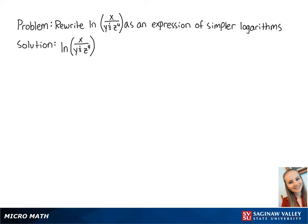Since there is division within the logarithm, we're first going to use the quotient property to rewrite this as the ln of x minus the ln of y to the 1/3rd power times z to the 4th power.